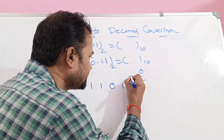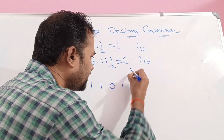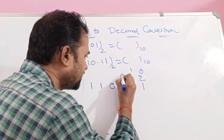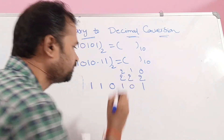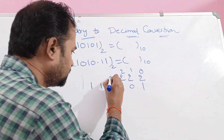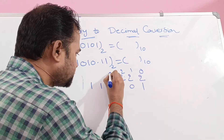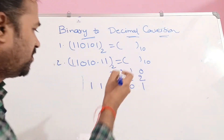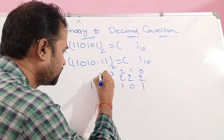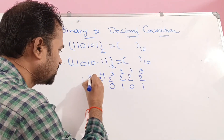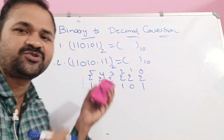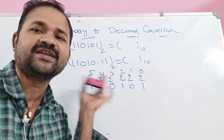The next bit is 2 power 1, next one is 2 power 2. Because binary means base 2. So the next bit on top of 0 is 2 power 3, then 2 power 4, and 2 power 5. Likewise, we need to continue if there are any other bits.